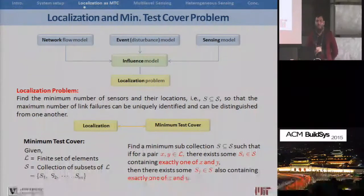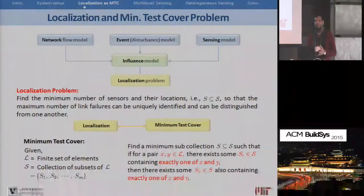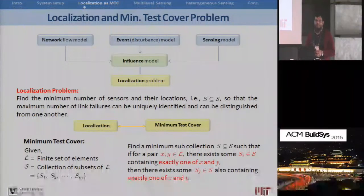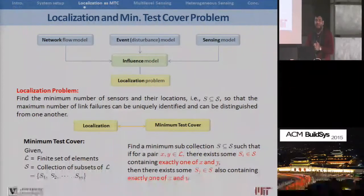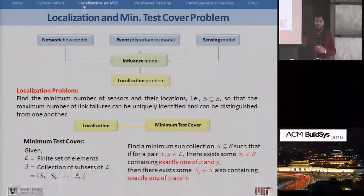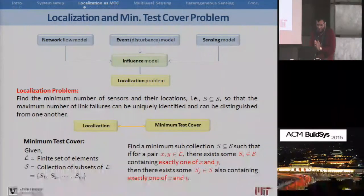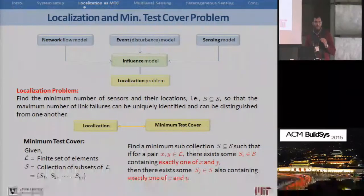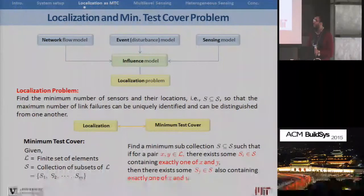So what is the localization problem? The localization problem is to select the minimum number of sensors so that the maximum number of failure events can be uniquely detected and localized. In terms of the boolean matrix, our job is to select the minimum number of columns such that each row in that set of columns is a unique output — that's how we can distinguish between them.